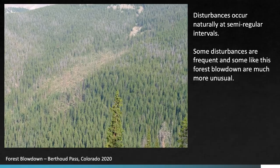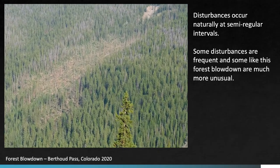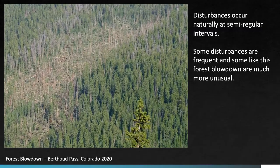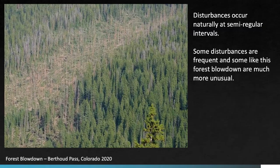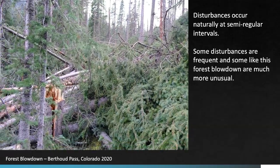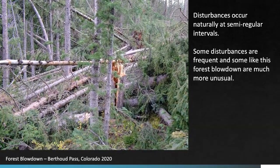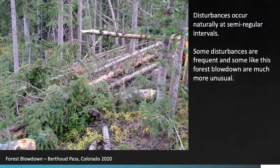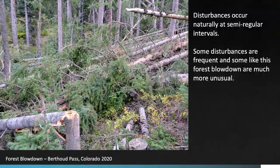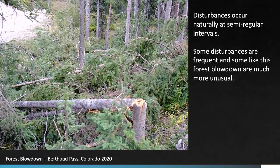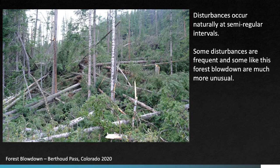Most disturbances occur at semi-regular intervals. The video here shows a relatively unusual disturbance in which a large patch of forest off of Berthoud Pass in Colorado was blown down in a strong windstorm in September 2020. This is not a common event but does occur every few decades. If you look closely in the forest you'll also see a lot of dead trees that have died off because of an outbreak of pine beetle — a disturbance that has killed off almost all the pines in large areas of Colorado forest.